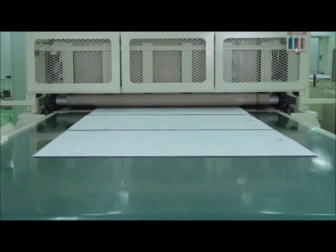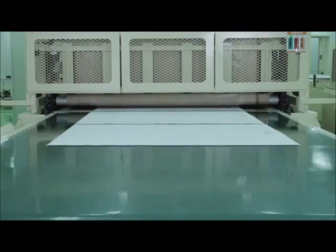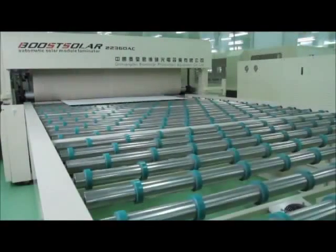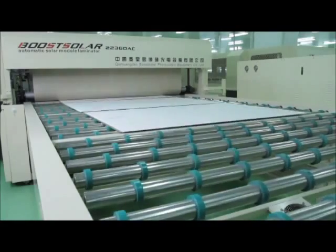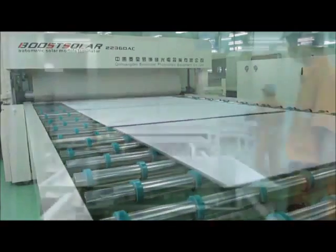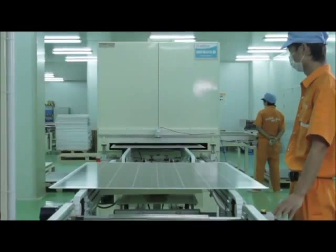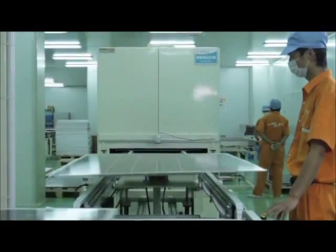Air is cleared away in the vacuum machine, then the heated EVA is melted to pack cells, glass, and the back sheet together. After the lamination is achieved, we test the module with the EL test again.